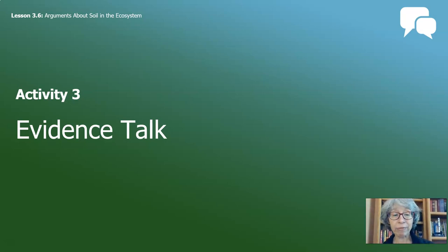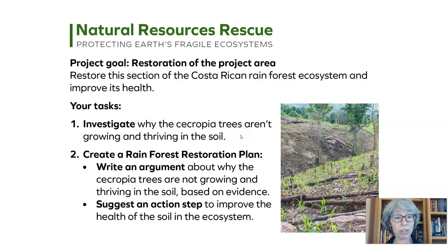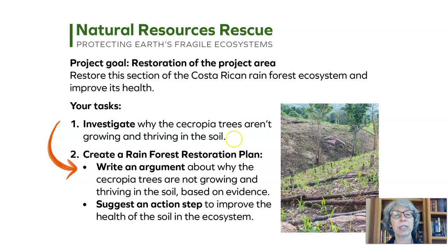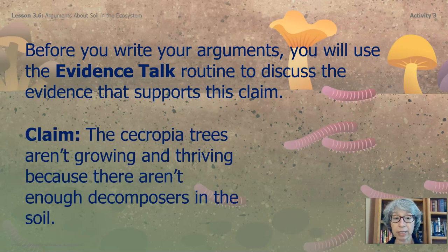Our last activity for today's video is evidence talk — you did this in chapter one. Let's review our plan. We had a project goal to restore and improve the health of a particular section in the Costa Rican rainforest. We investigated why the Cecopia trees aren't growing and thriving in the soil. Now we're getting ready to write an argument about that based on the evidence we've collected. Before you write your arguments, you'll use the evidence talk routine to discuss the evidence that supports the claim.